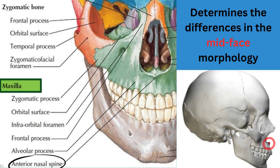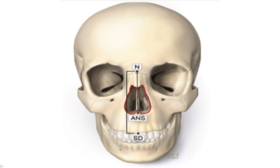Next is the anterior nasal spine, which determines differences in mid-face morphology. It is immediately in the midline of your face, and this point is very important for a prosthodontist in order to determine the midpoint of the face. Here is a picture showing a clearer position for the anterior nasal spine — as you can see, it is directly found in the midline of the face.